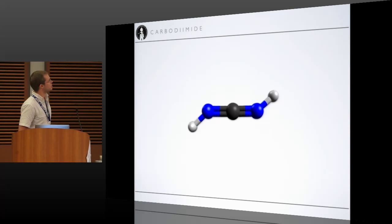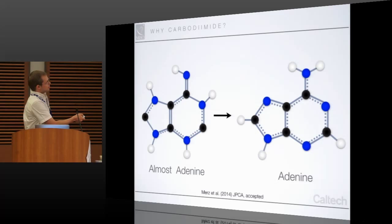There was a paper very recently that said if you want to make adenine, which is in RNA and DNA, there's the connection, you can start with this molecule here which I've called almost adenine because I have no idea how to pronounce the name.